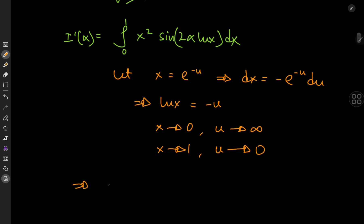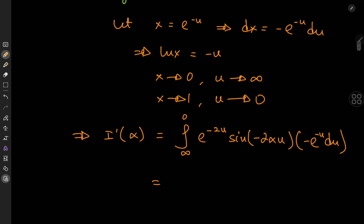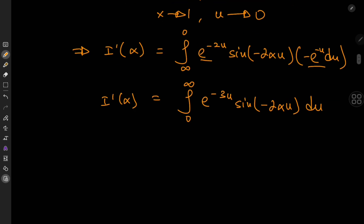So that means the derivative of i with respect to alpha in the u world is now an integral from infinity to 0 of x squared which is now e to the negative 2u times the sine of negative 2 alpha u times e to the negative u du. And of course we can get rid of the extra negative sign if we switch up the limits of integration. So we have the integral from 0 to infinity of e to the negative 3u on multiplying the exponential terms times the sine of negative 2 alpha u du, which we can solve using some basic complex analysis.